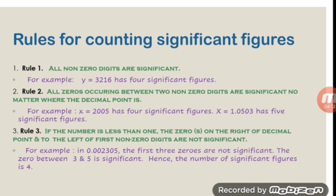Rule 3: if the number is less than 1, the zeros on the right of the decimal point and to the left of the first non-zero digit are not significant. For example, in 0.002305, the first three zeros — one at the left side of the decimal point and two at the right side — are not significant. The zeros between 3 and 5 are significant according to Rule 2. Hence, the number of significant figures is 4.